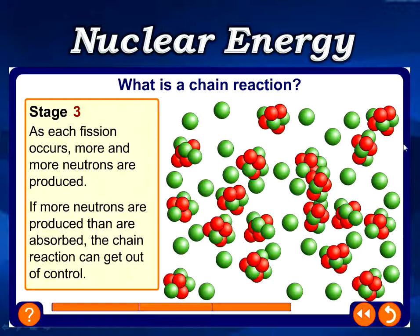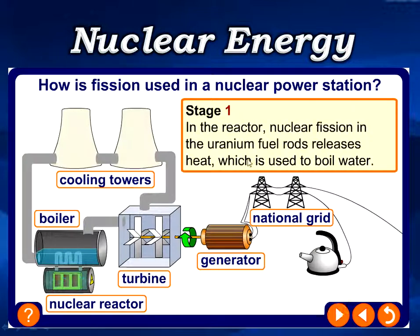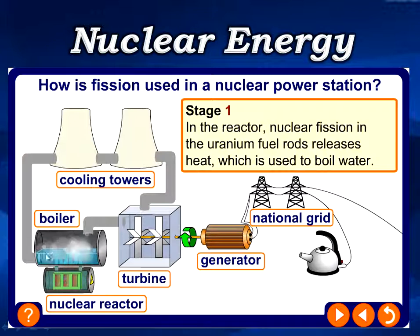Now we look at the nuclear reactor. This shows how a nuclear power station uses nuclear fission to generate electricity. Stage one: the nuclear reactor undergoes a chain reaction of uranium fuel rods, producing a large amount of heat energy. This heat energy is used to heat a boiler containing water and bring it to a boil.